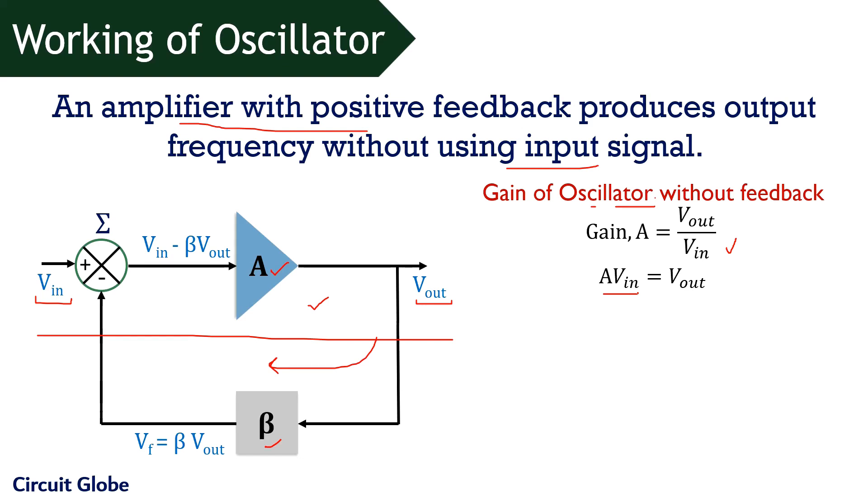Now, moving further, with the consideration of feedback part in the circuit, the gain of the oscillator with feedback will become equal to A of V-in minus beta V-out is equals to V-out. Now, you must be thinking what a surprise this equation is. So, guys, don't worry. Let's understand how this equation came. So, when feedback network was not present, the input was V-in. But when feedback is involved in the circuit, then the input has become V-in minus beta V-out.